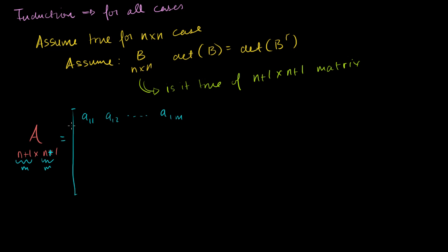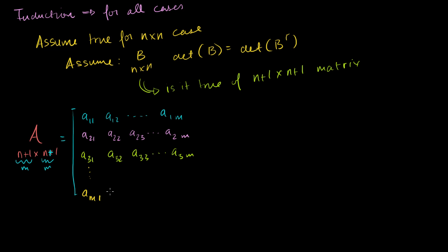Then the second row: A₂₁, A₂₂, A₂₃, all the way to A₂ₘ. Then the third row: A₃₁, A₃₂, A₃₃, all the way to A₃ₘ. And then you go all the way down to the mth row — which you could also call the n+1th row — with entries Aₘ₁, Aₘ₂, Aₘ₃, all the way to Aₘₘ.